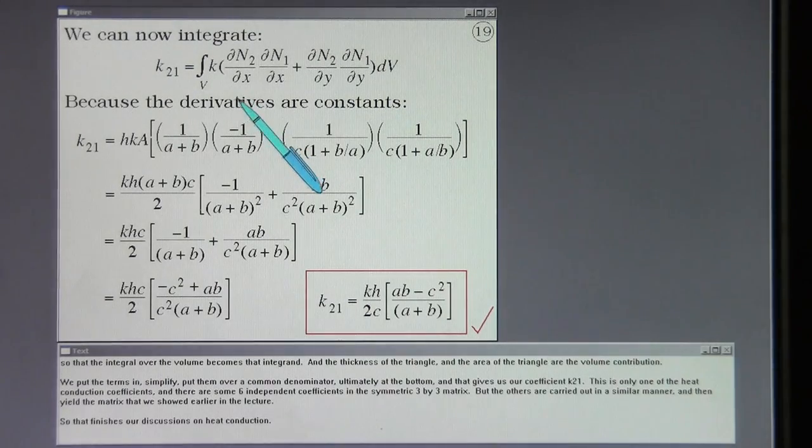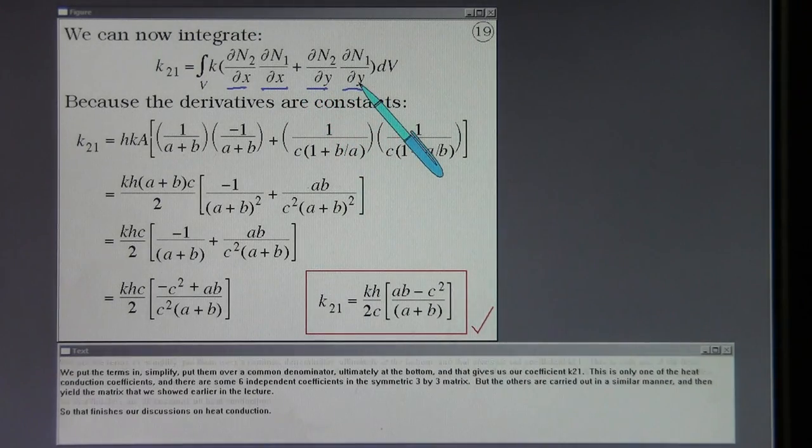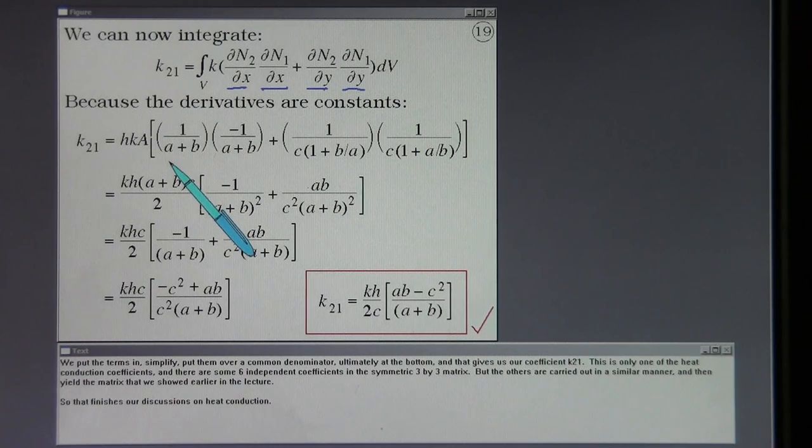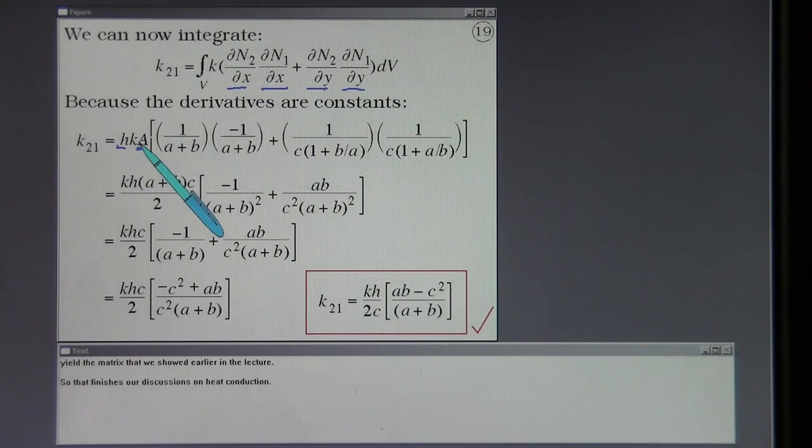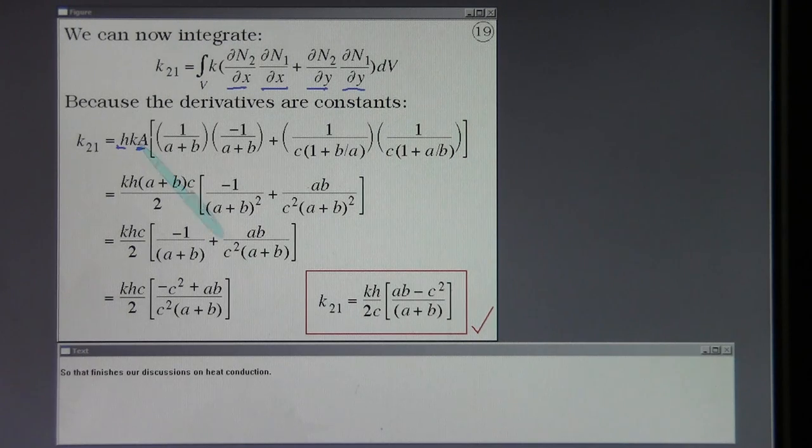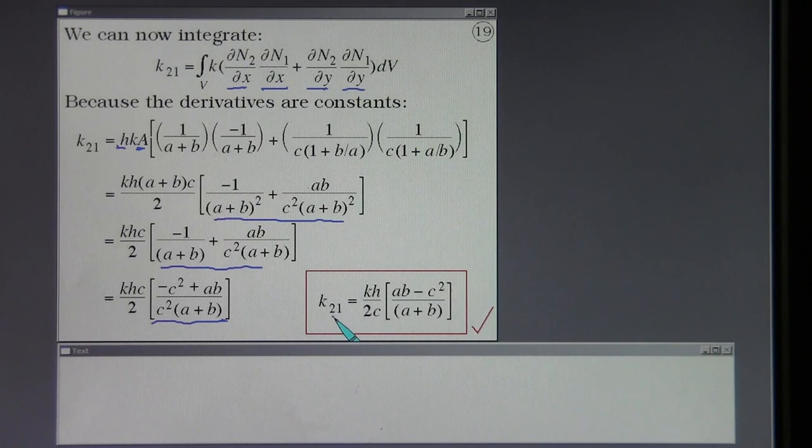Here we can find our coefficient k21 having calculated these four needed quantities. In fact those are all constants and so the integral over the volume becomes that integrand and the thickness of the triangle and the area of the triangle are the volume contribution. We put the terms in, simplify, put them over a common denominator ultimately at the bottom, and that gives us our coefficient k21. This is only one of the heat conduction coefficients and there are some six independent coefficients in the symmetric three by three matrix, but the others are carried out in a similar manner and then yield the matrix that we showed earlier in the lecture. So that finishes our discussions on heat conduction.